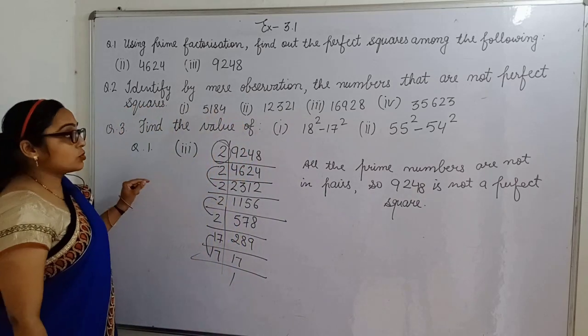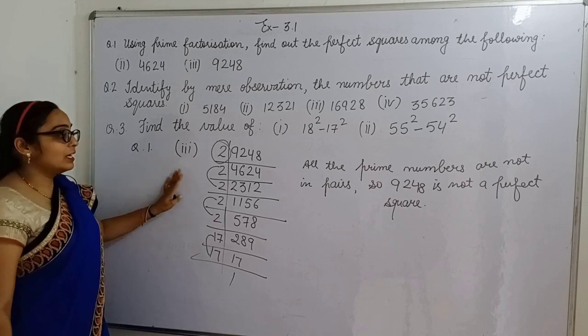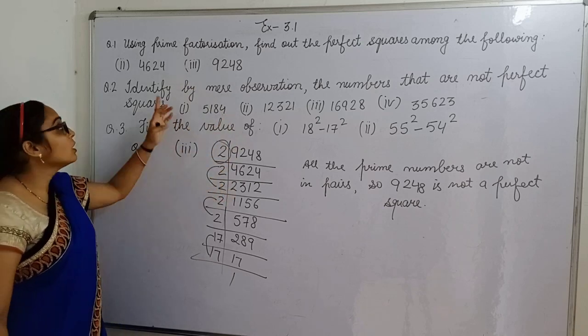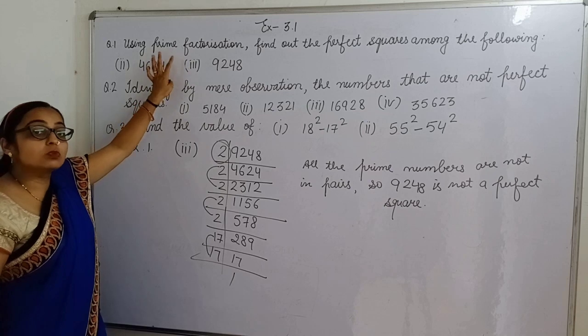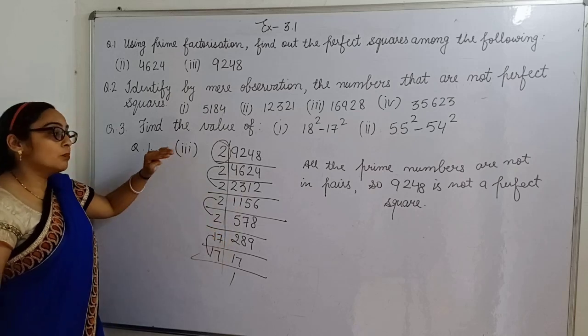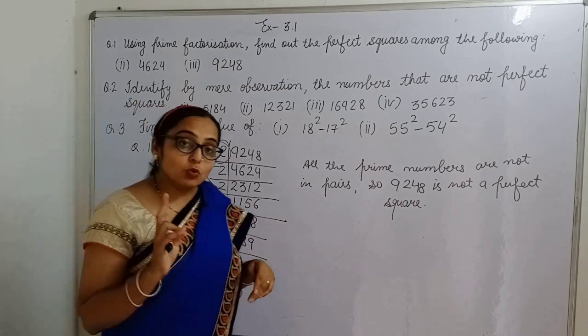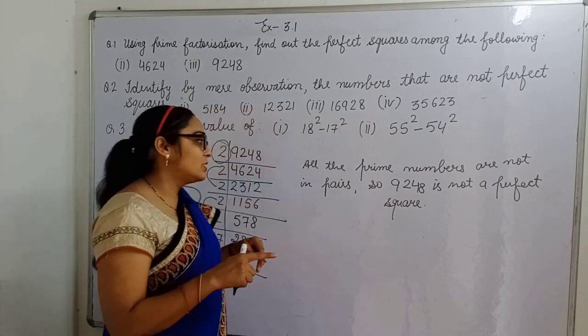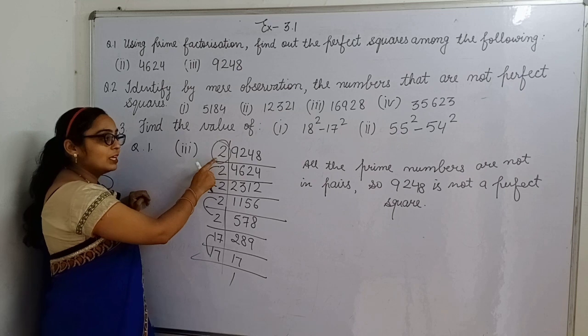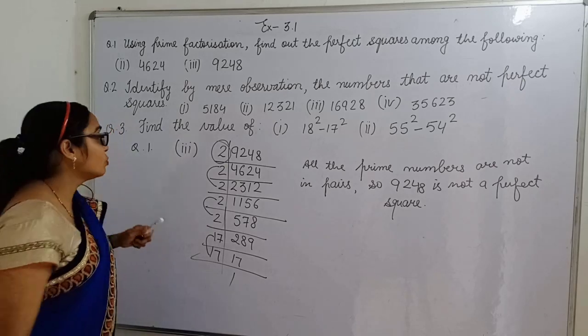I hope this first question is clear to all now. In case of any doubt you can tell me in the comment box, how to check whether a given number is perfect square or not. Using here what we have to use - prime factorization. You all know about the prime numbers, that the numbers which have exactly two factors, one and the number itself. So aapne yahan check kiya, two ka pair nahi bana, two pair mein nahi hai, it means this is not a perfect square. Now let's come to the next question.